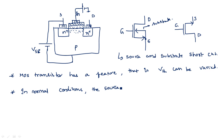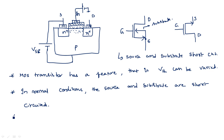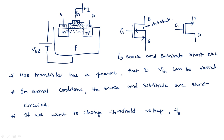Under normal conditions, the source and substrate are short-circuited. If you have worked on Mentor Graphics in your college, you may have observed the fourth terminal short-circuited to source for any transistor, whether PMOS or NMOS. If we want to change the threshold voltage, a biasing supply VSB is needed.